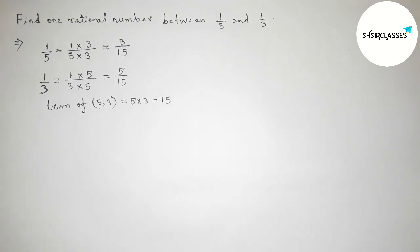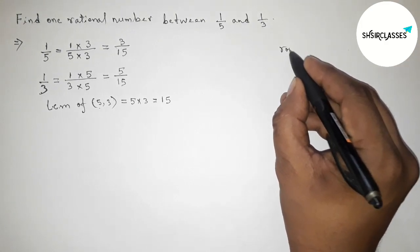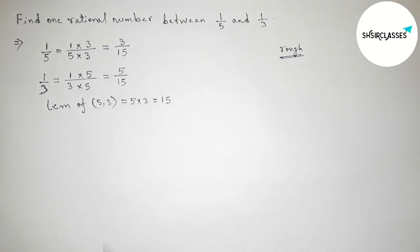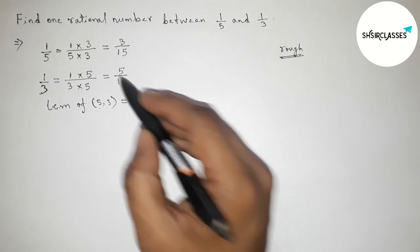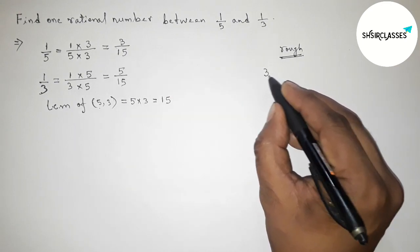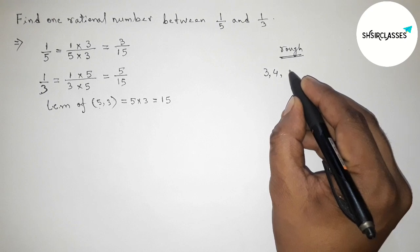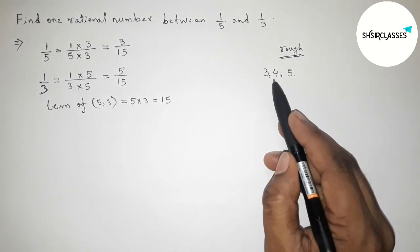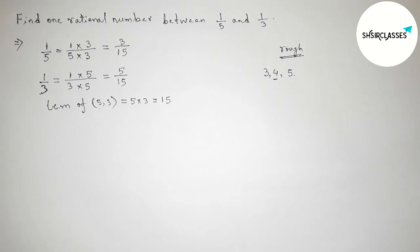So here both the denominators are equal. Now I'm discussing here some important calculation. Here denominators are equal, so now between 3 to 5 we can get here only one integer. So by this one integer we can form one rational number.